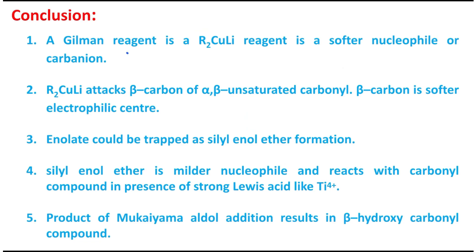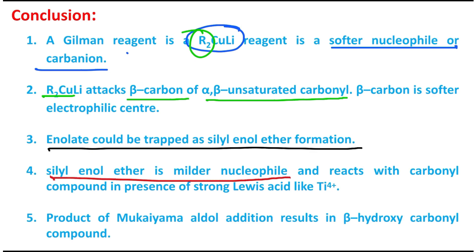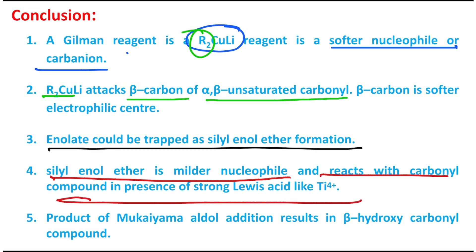In conclusion: the Gilman reagent (R₂CuLi) is a softer nucleophile and attacks the beta carbon of alpha-beta unsaturated carbonyl compounds. The resulting enolate is trapped as a silyl enol ether, which is a milder nucleophile. It cannot react directly with a carbonyl compound but does so in the presence of a strong Lewis acid like titanium(IV). This titanium(IV)-mediated silyl enol ether addition to an aldehyde is called the Mukaiyama aldol reaction, producing a beta-hydroxy carbonyl compound after workup.